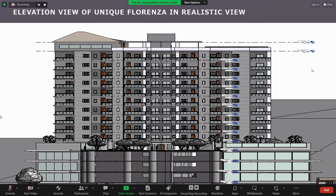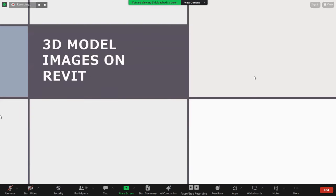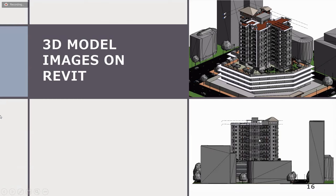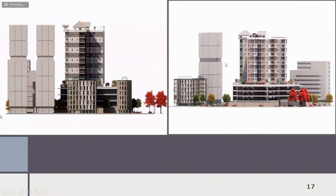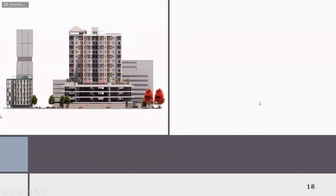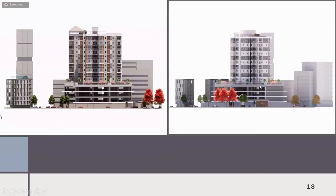We have 3D model images of Revit. The first image is from the bird's eye perspective, the second from the left side, and the third image as well. These are orthographic views of Unique Florenza taken with the help of Enscape — you can see the first image, second image, and the third one from the front, and one from the left side of the building.